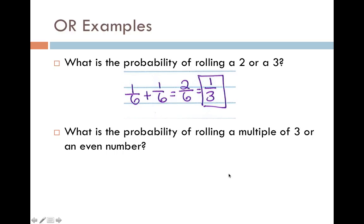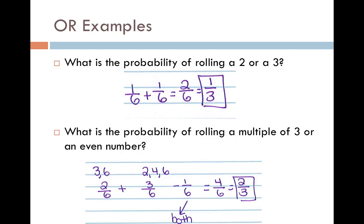What is the probability of rolling a multiple of 3 or an even number? These are not mutually exclusive. The probability of rolling a multiple of 3, there are 2 of those in a regular die, 3 and 6. So that probability is 2/6.